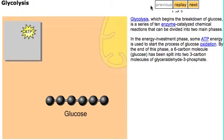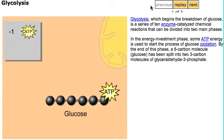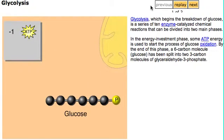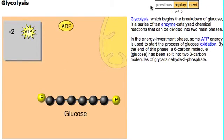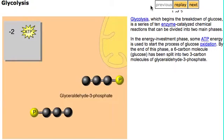In the energy investment phase, some ATP energy is used to start the process of glucose oxidation. By the end of this phase, a six-carbon molecule, glucose, has been split into two three-carbon molecules of glyceraldehyde phosphate.